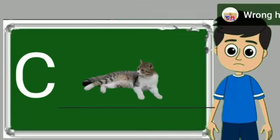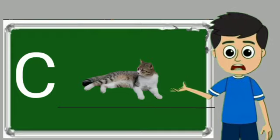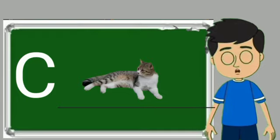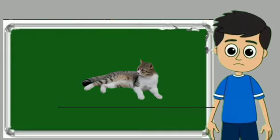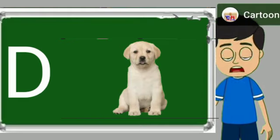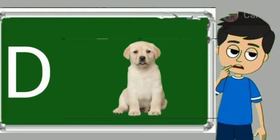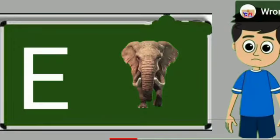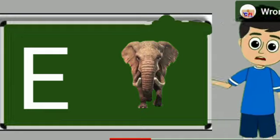C for cat. Cat means billy. D for dog. Dog means kutta.